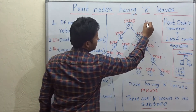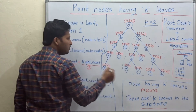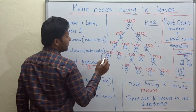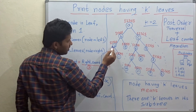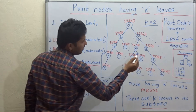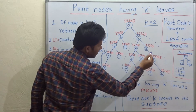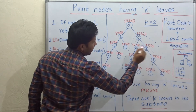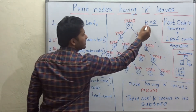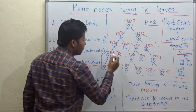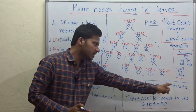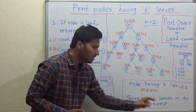Now if k is equal to 2, how many nodes are there in this binary tree such that k equals 2 — meaning they have 2 leaves? Node D has 2 leaves in its subtree. Node G also has 2 leaves in its subtree. So nodes D and G are the nodes that have k leaves, that is k equal to 2. Node having k leaves means there are k leaves in its subtree.